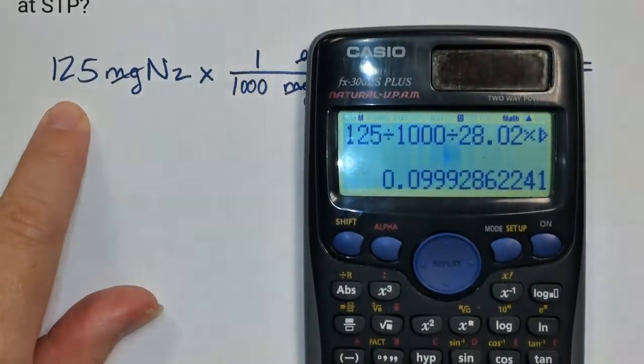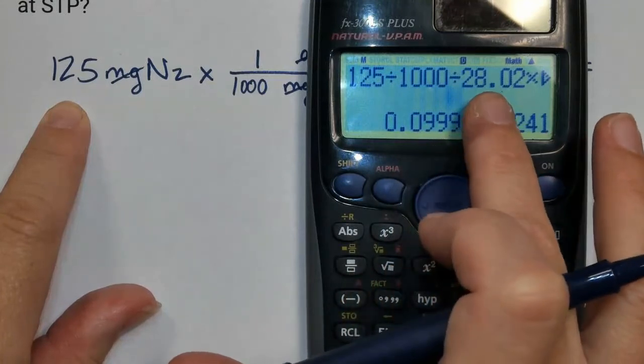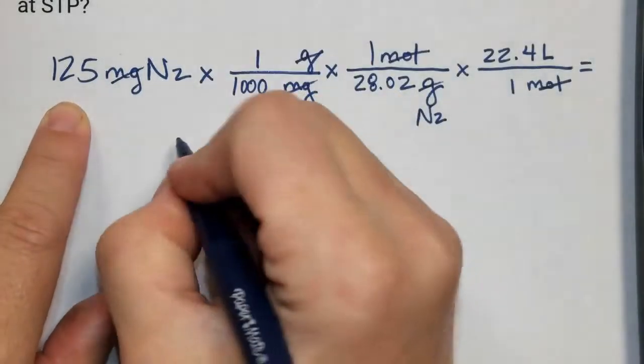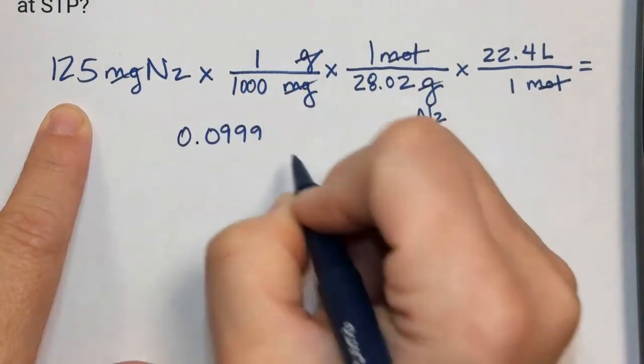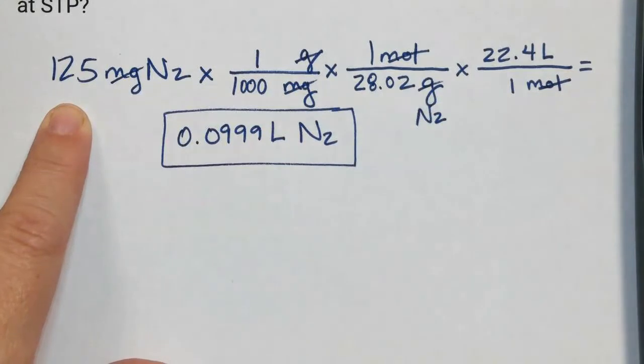I had three sig figs to start, so I'm going to go with 0.0999 and stop. That'll be three significant figures. So we have 0.0999 liters of nitrogen gas as our final answer.